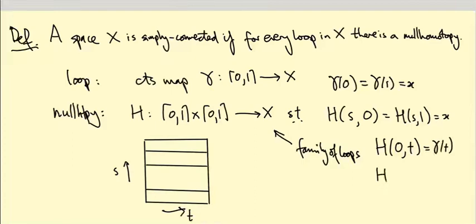And the loop I get by looking at s equals one, so H(1, t), the top of the square, is the constant loop that just sits at the base point x.